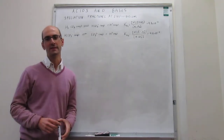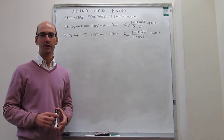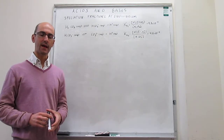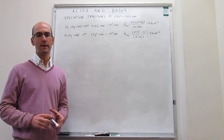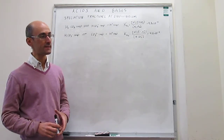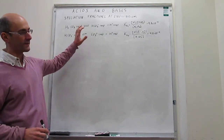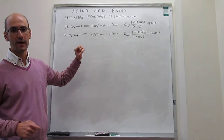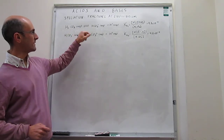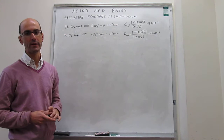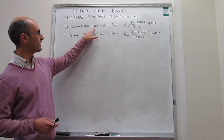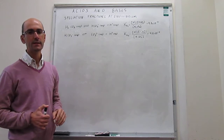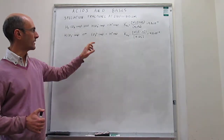In a prior video we have seen how to calculate the pH of a polyprotic acid, and to illustrate that calculation we used the equilibrium of carbonic acid. Here we have the carbonic acid equilibria, and we can see that there are two different equilibria. The first is the dissociation of one proton from carbonic acid to generate bicarbonate, and then bicarbonate can also act as an acid and dissociate a second proton to generate carbonate ions.